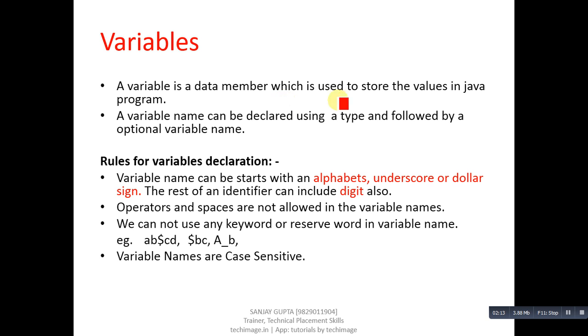A variable name can be declared using a type followed by the variable name. There are some rules to declare a variable name. Variable names can start with an alphabet, underscore, or dollar sign.